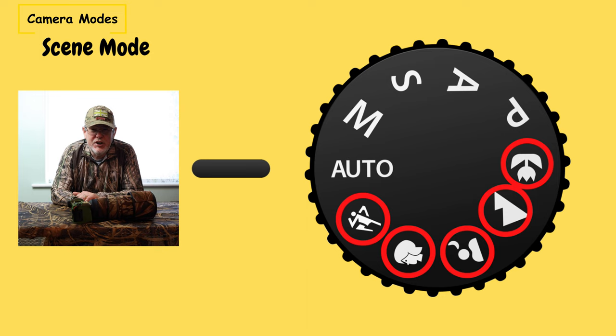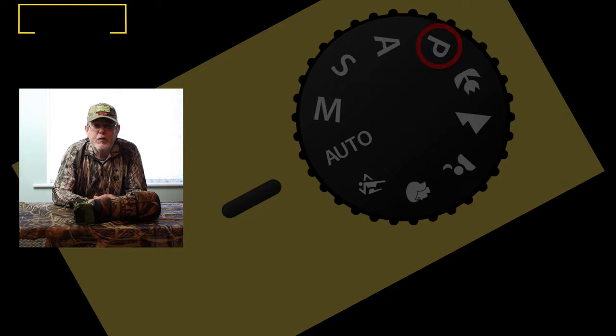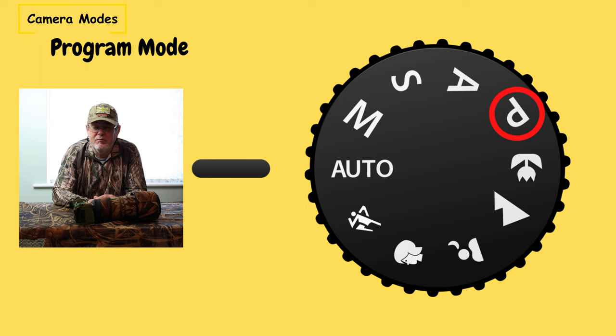We also have scene modes — again, you have absolutely no control over your exposure settings. If you're using either automatic or any of the scene modes for wildlife photography, I strongly advise you to try and stop using them and use one of the camera modes I'm going to recommend. Of the four main camera mode settings, the first one is the P mode, which is the program mode — again the camera chooses the aperture and the shutter speed. I'm going to advise you that it's not a good mode to be using for wildlife photography. There are better modes.